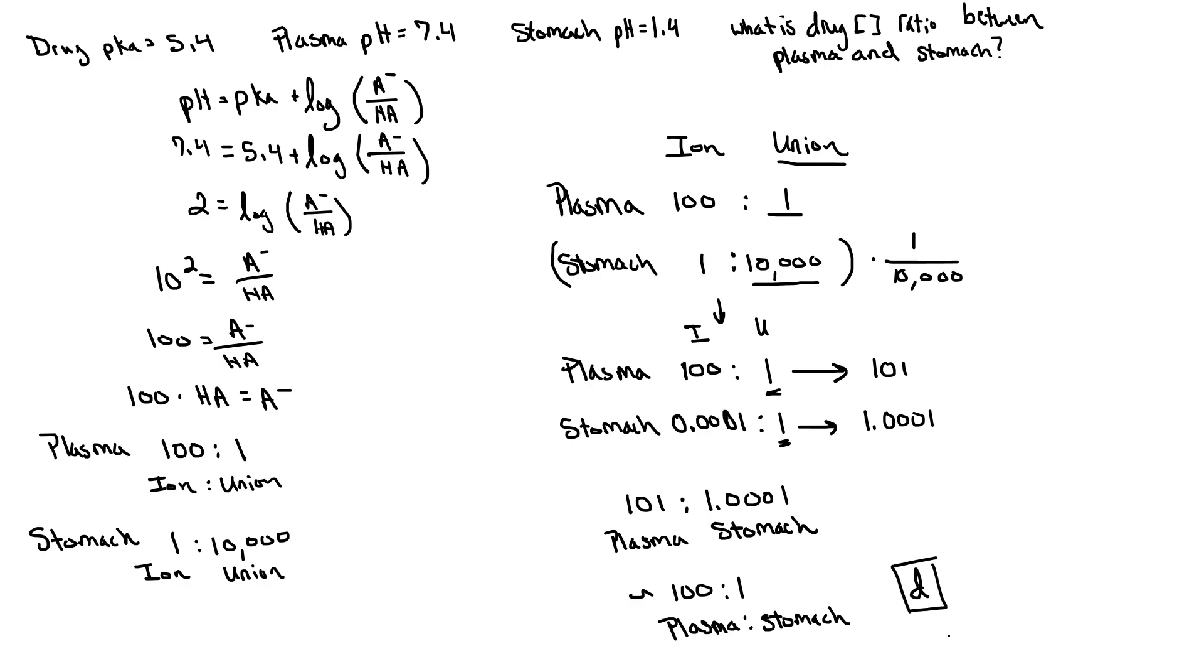Hopefully this was helpful. The first step is to find out what the ratio of ionized to unionized is. Make this 2x2 table here. Once you've made it to the 2x2 table, then the next step is to set each of the unionized to be the same amount. Then you add them across to get the total amount of ionized plus unionized. And you look at the ratio. So in this case, the ratio was 100 in the plasma to 1 in the stomach. Thank you so much for watching, and hopefully this was helpful.